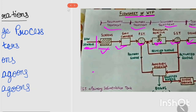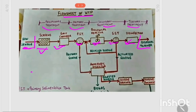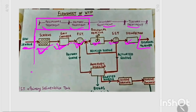Now if you relate this to our diagram, you can see that the physical operations include the screen, grit chamber, and PST. These represent the preliminary and primary treatment stages. Any mechanical technique used for sewage treatment falls under the physical process category.